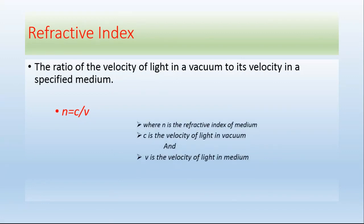n is the refractive index of medium, C is the velocity of light in vacuum, and V is the velocity of light in medium.